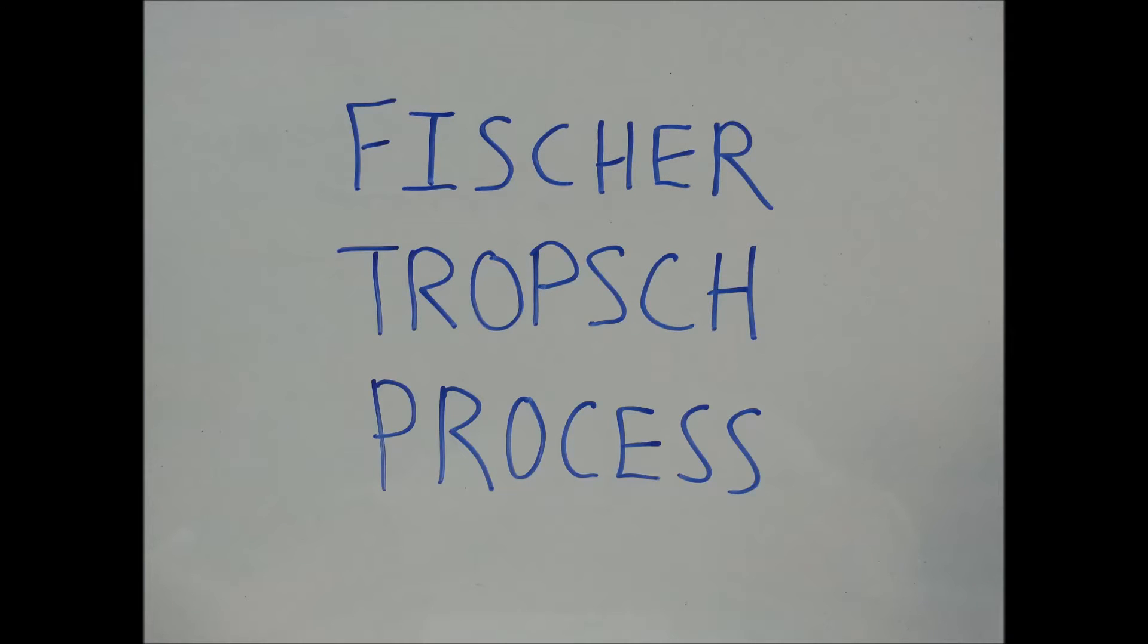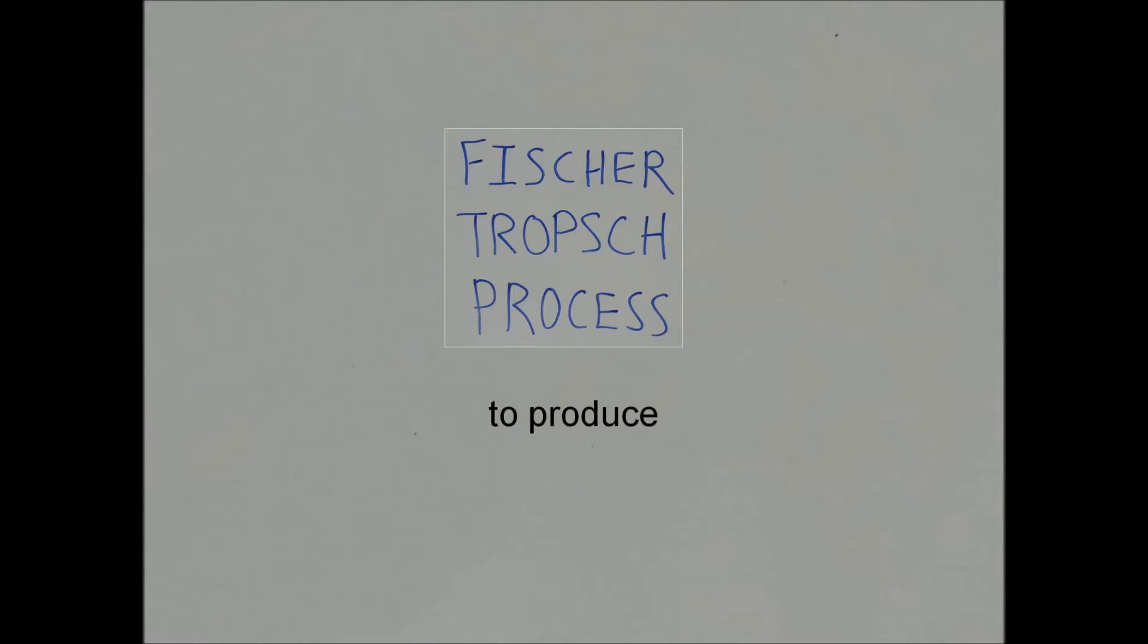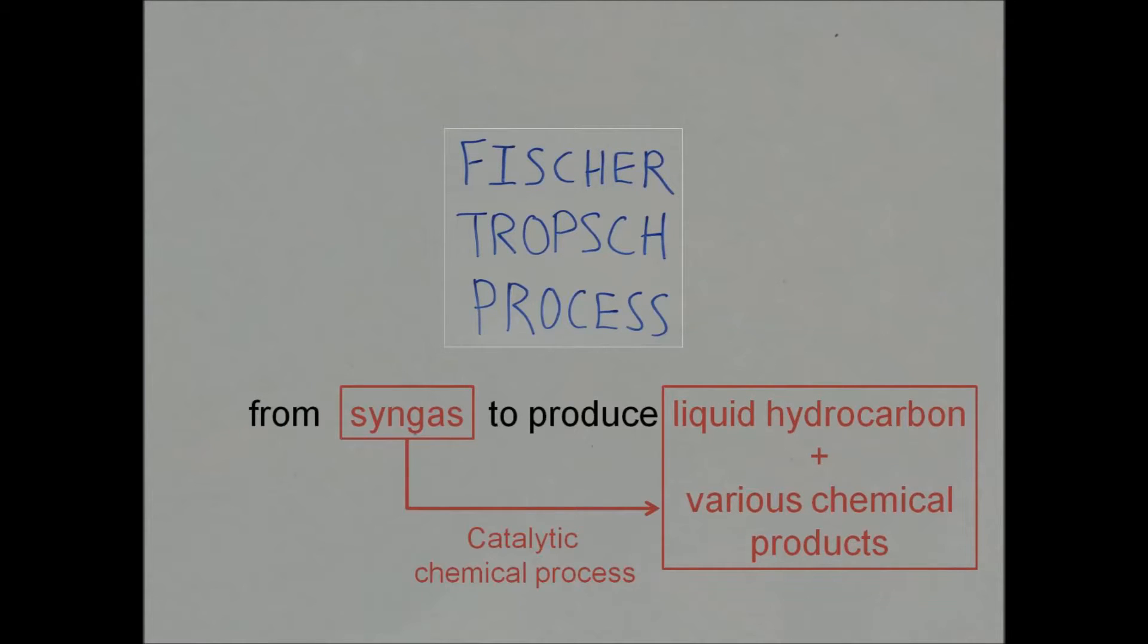The Fischer-Tropsch process is designed to produce liquid hydrocarbon fuels and various chemical products from syngas through a catalytic chemical process.